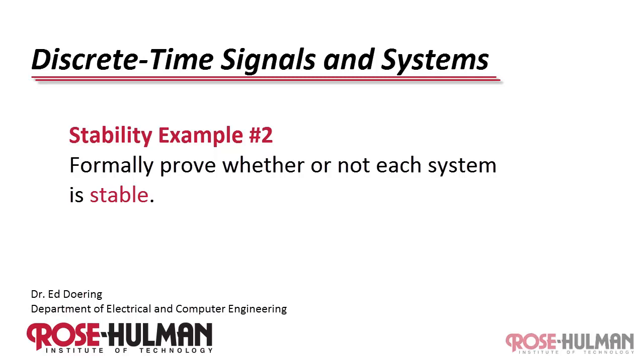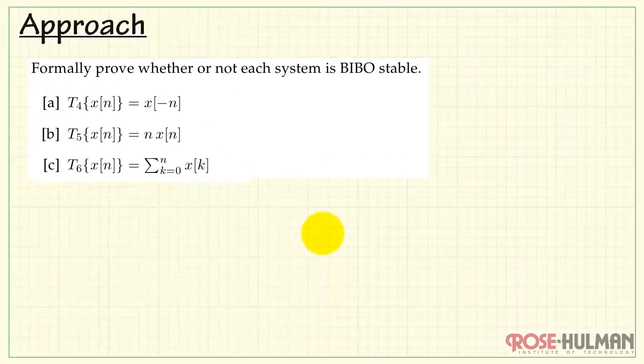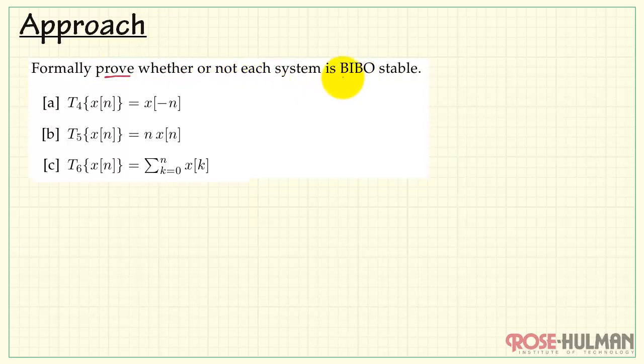This is stability example number two. Formally prove whether or not each system is stable. Let's take a look at the overall approach. We want to formally prove whether or not each system is bounded input, bounded output, stable.